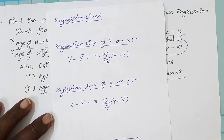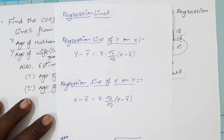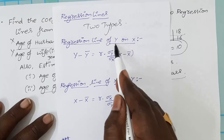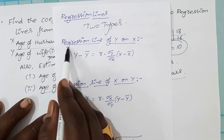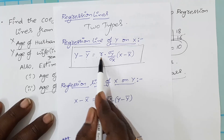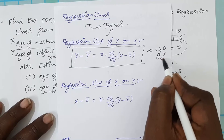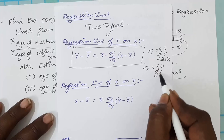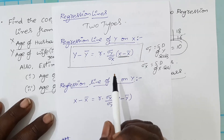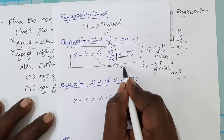If x and y are dependent variables, then we can find the correlation coefficient r using the formula. There are two types of regression lines. The regression line of y on x is: y − ȳ = r·(σy/σx)·(x − x̄), where σy is the standard deviation of the y series and σx is the standard deviation of the x series. The term r·(σy/σx) is called the regression coefficient of y on x, denoted by b_yx.